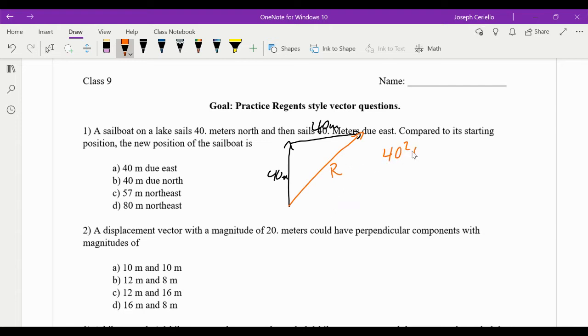Well, we have 40 squared plus 40 squared equals r squared. Square these numbers, take the square root of both sides. You should get about 57 meters equals r. So it's choice c. And northeast makes sense because it's going up and to the right.